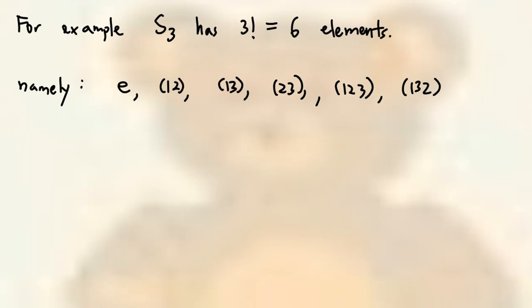For example, S sub 3 has 3 factorial equal to 3 times 2 times 1 equal to 6 elements. Namely,